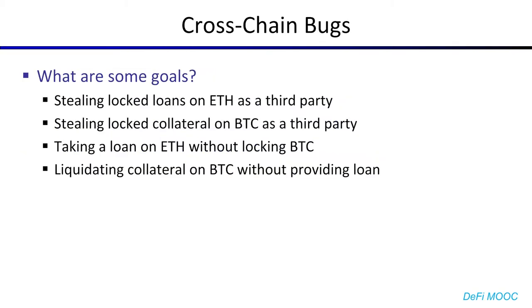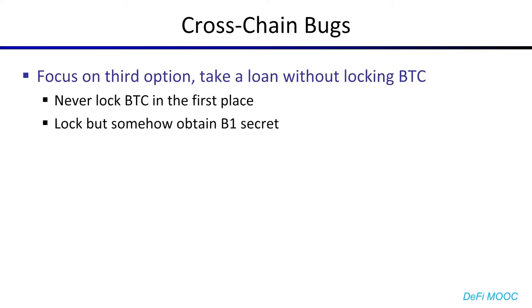In a system like this, it's usually good to start with some goals — what exactly do you want to do or exploit? As a third party, it'd be cool to steal either the collateral on ETH or Bitcoin, or the locked loans on ETH or locked collateral on Bitcoin. Alternatively, as a participant, it'd be cool to either steal the loans on ETH by not locking the Bitcoin, or steal the collateral on Bitcoin without actually providing the loan. In this case study, we're only going to be looking at the third option: taking a loan without locking the Bitcoin.